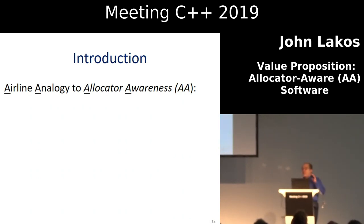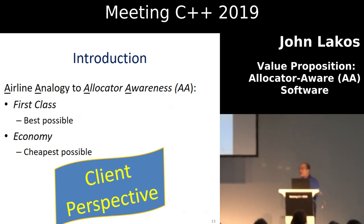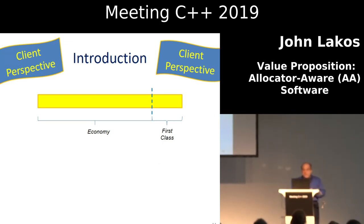Probably one of the most important things I can explain to you is an airline analogy. Think about first class as the best possible, and economy as the cheapest possible — from the client perspective. If you imagine a single dividing line, you're either in economy or you're in first class. You can imagine that people can be sorted in terms of how much they want to be in first class — from 'I don't care at all' to 'I absolutely must fly first class.' And there's some point at which they're willing to pay for it.